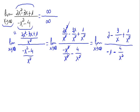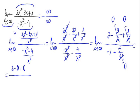Now every term divided by x approaches 0 as x tends to infinity. So the limit would be 2 minus 0 plus 0, divided by minus 1 minus 0. This is equal to 2 divided by minus 1, so the result is minus 2.